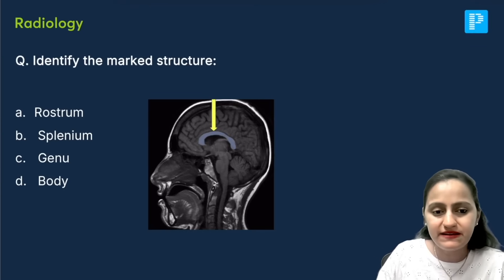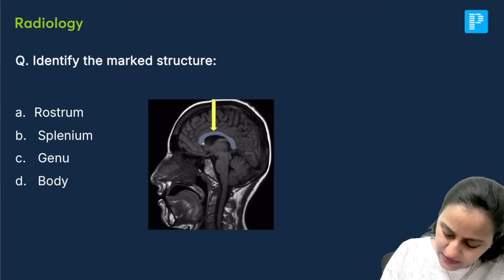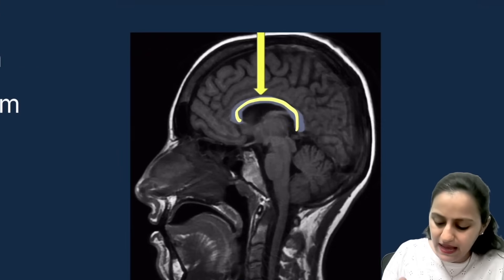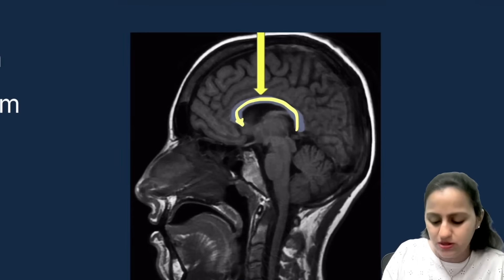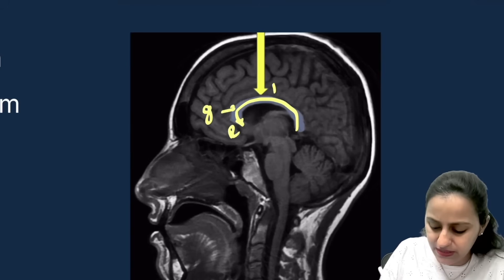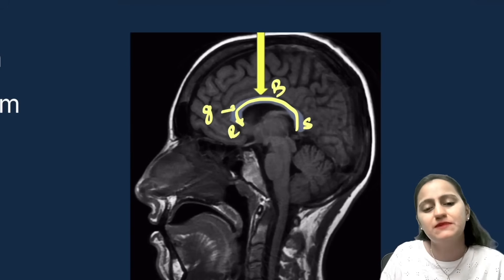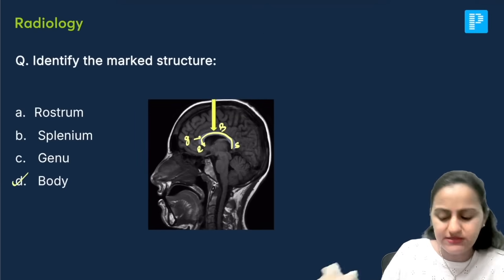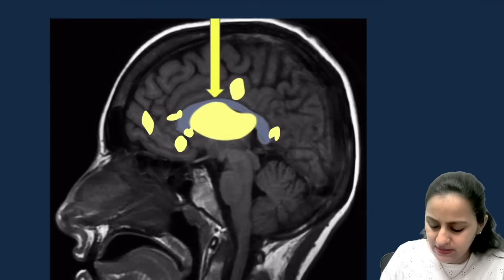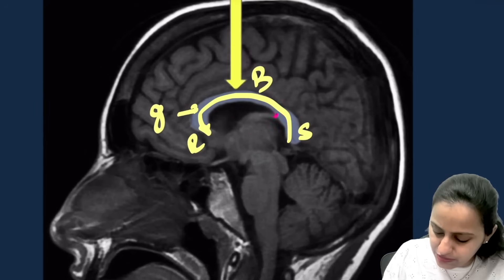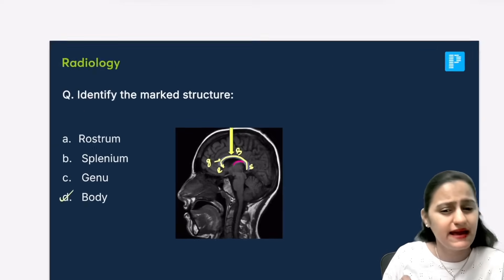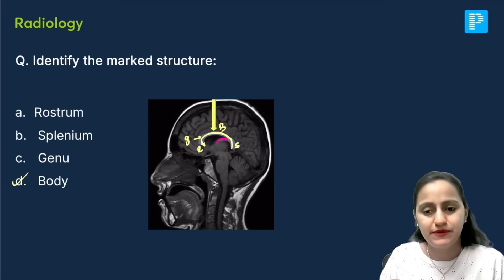The next question asks to identify the marked structure. What we are seeing is the corpus callosum, the white matter. The first part is called the rostrum, then the genu (which is the angle), then the body, and the posterior part is the splenium. The marked part here is the body of the corpus callosum. The other structure visible here is the fornix. This has been discussed in our radio-anatomy images.